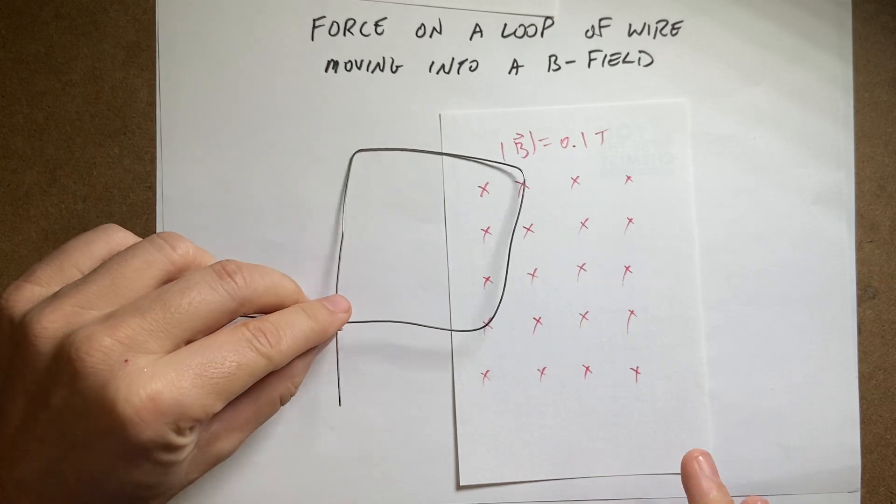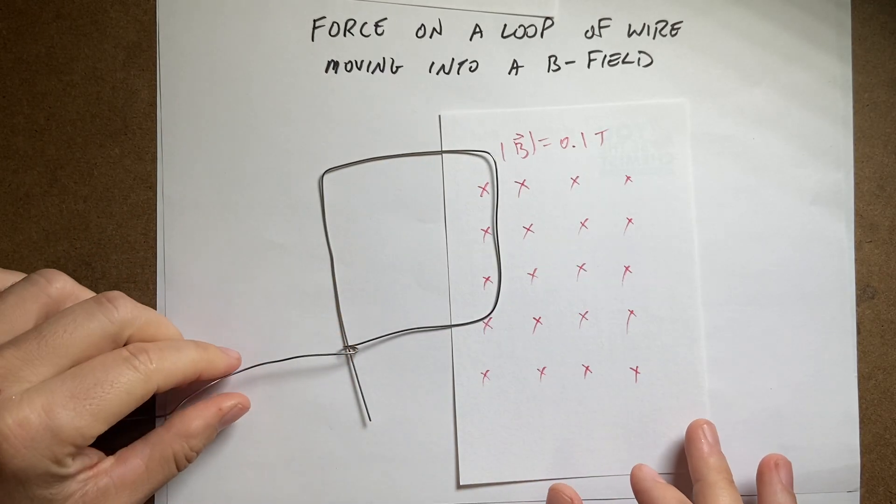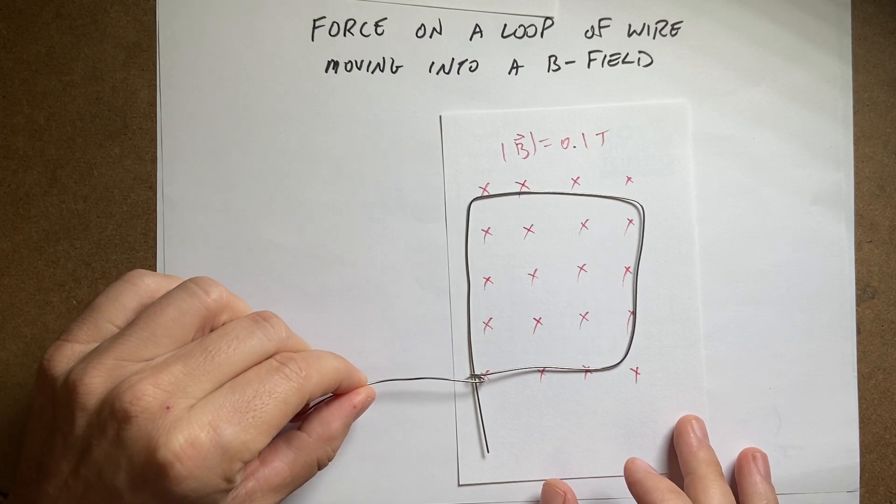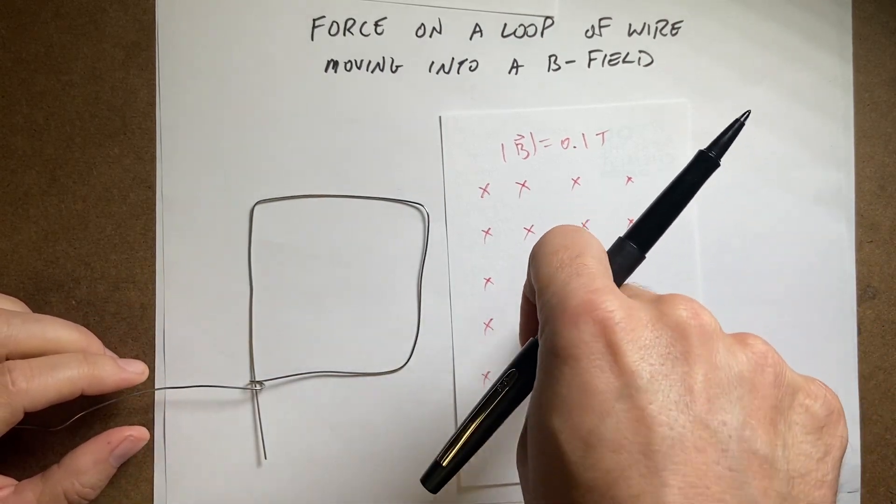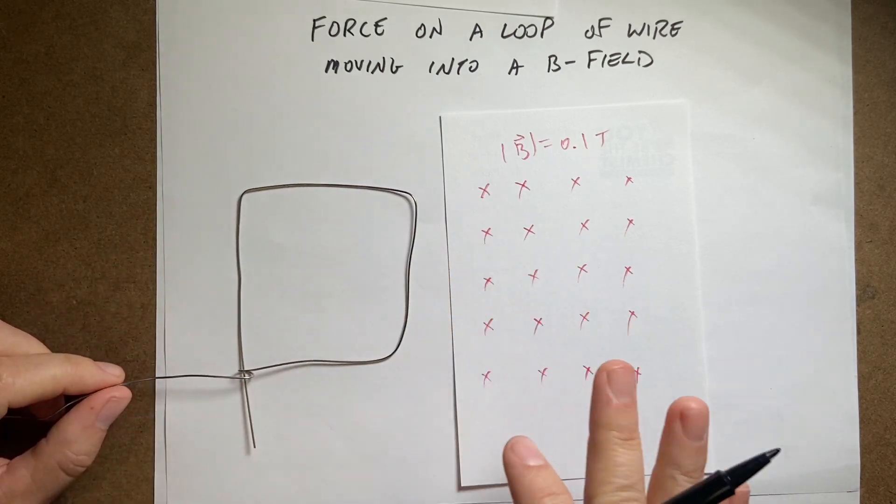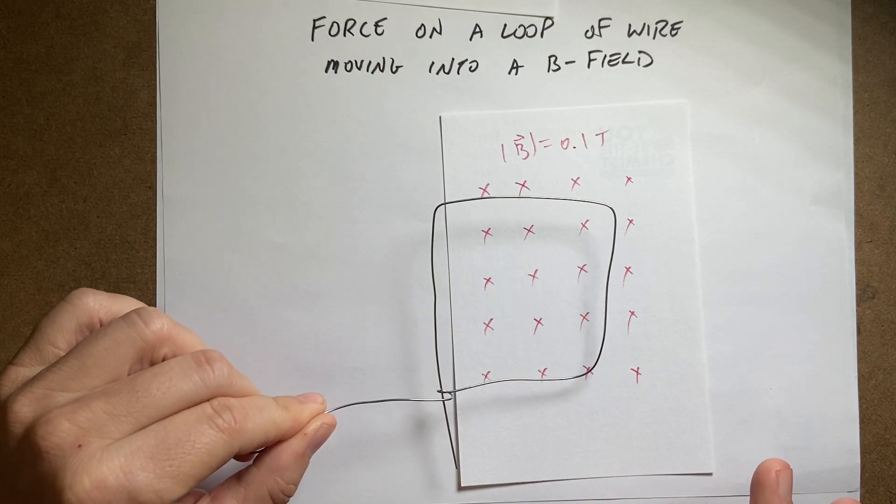And then I have this loop. It's a square loop. It's not perfectly square because I made it in real life. And this is going to be moving like this into the magnetic field. So the magnetic field is going into the paper. The loop is in the plane of the paper and moving to the right.